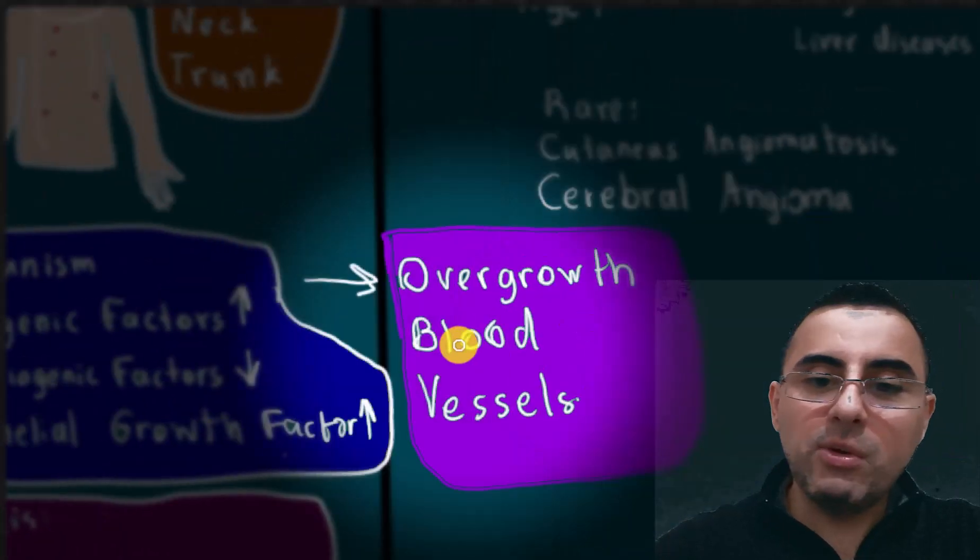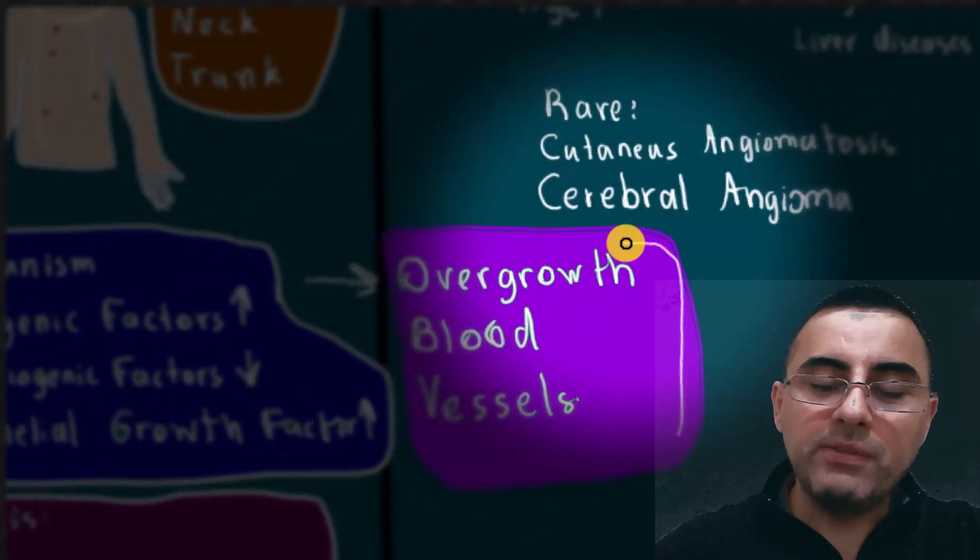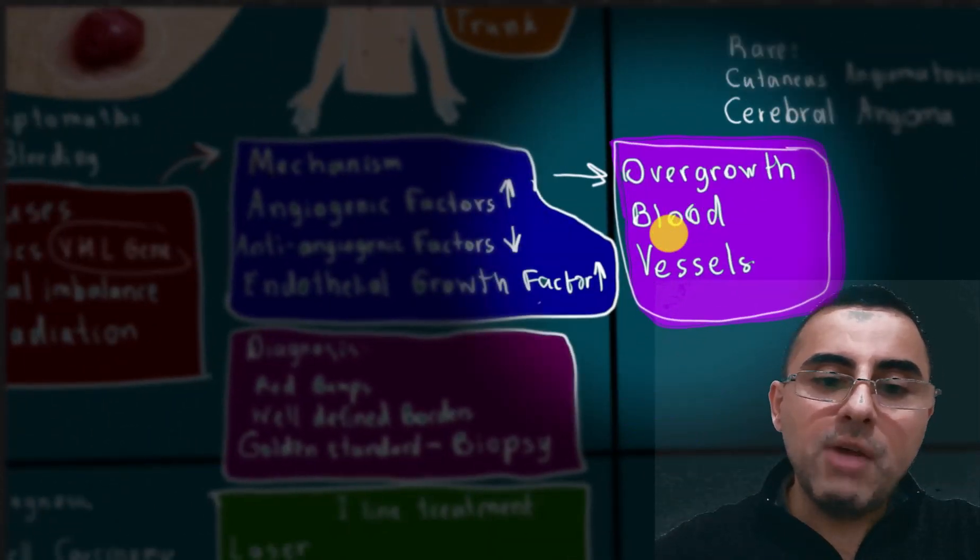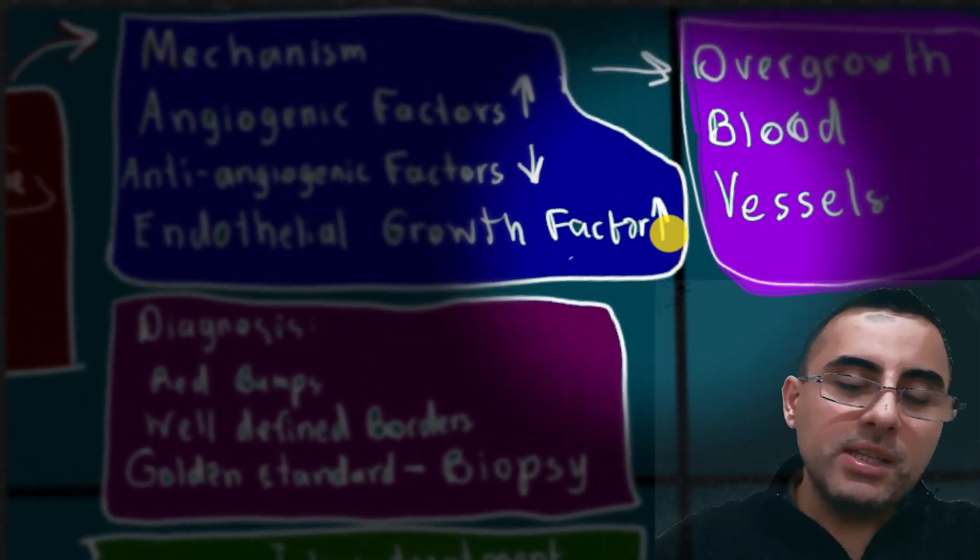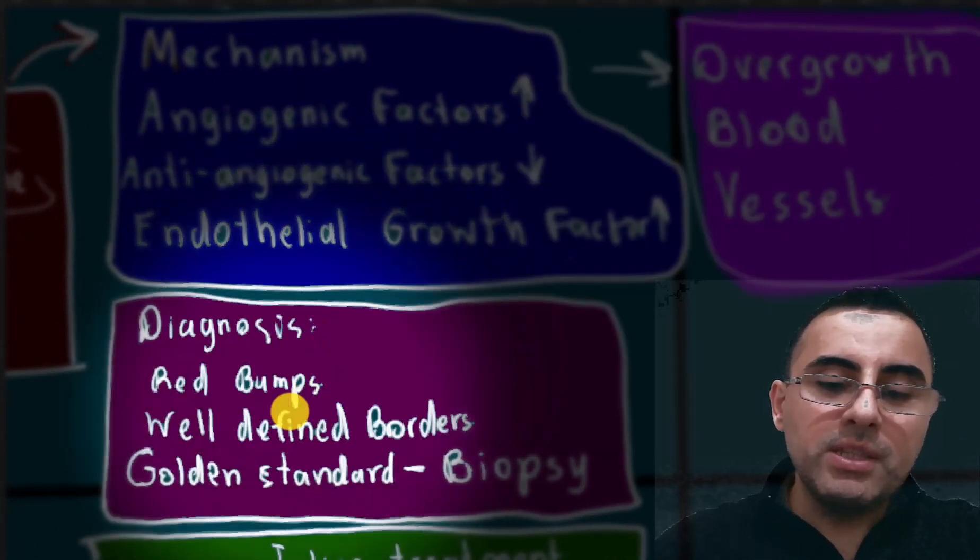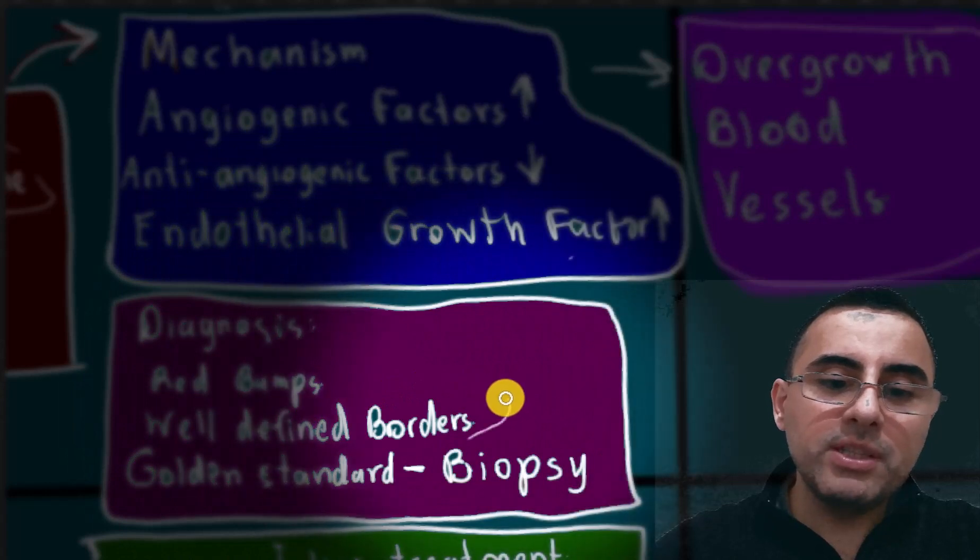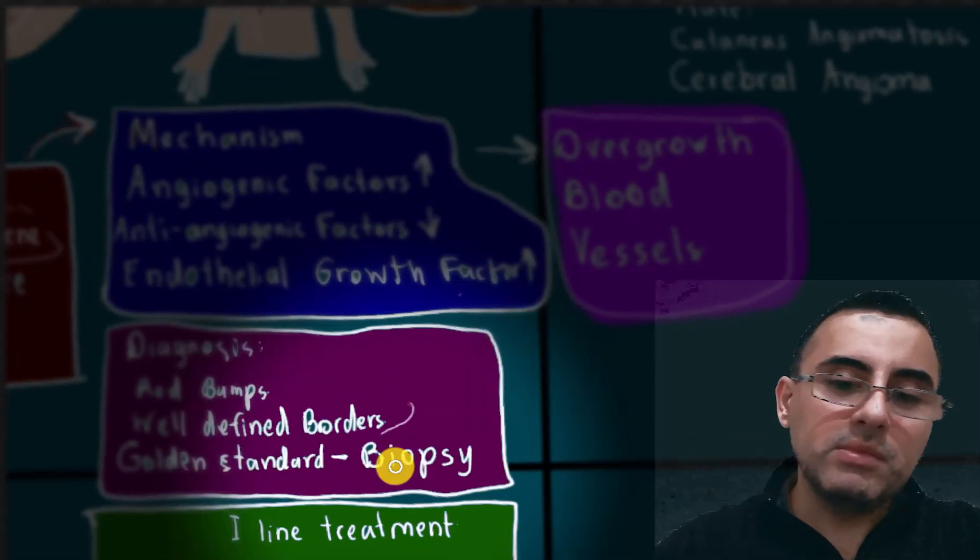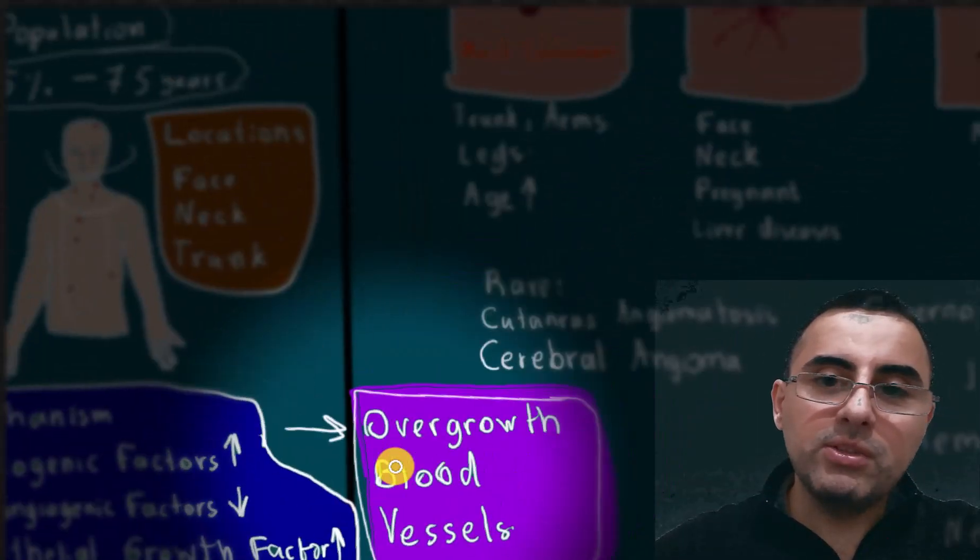How do we diagnose angioma? Usually with clinical appearance—red bumps with well-defined borders. The gold standard of diagnosis is biopsy, but biopsy is not always needed.